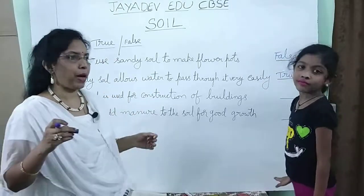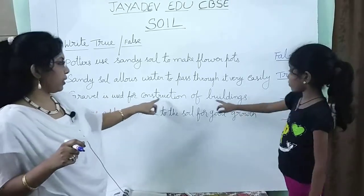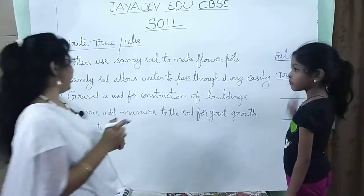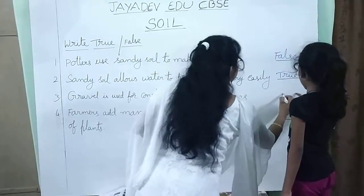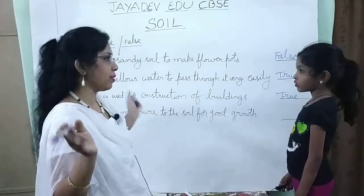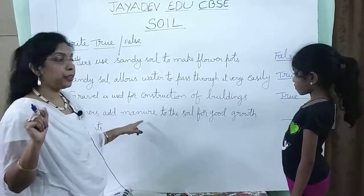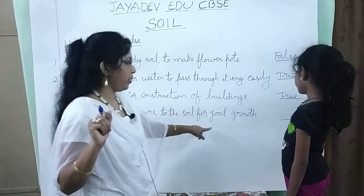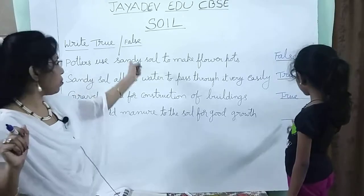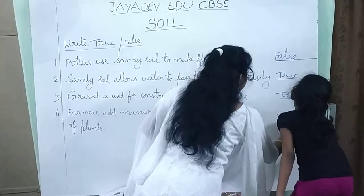Water can easily pass through sandy soil. And gravel is used for construction of buildings — true or false? It is true. In order to construct buildings, we use gravel. Farmers add manure to the soil for good growth of plants — true or false? It is true.